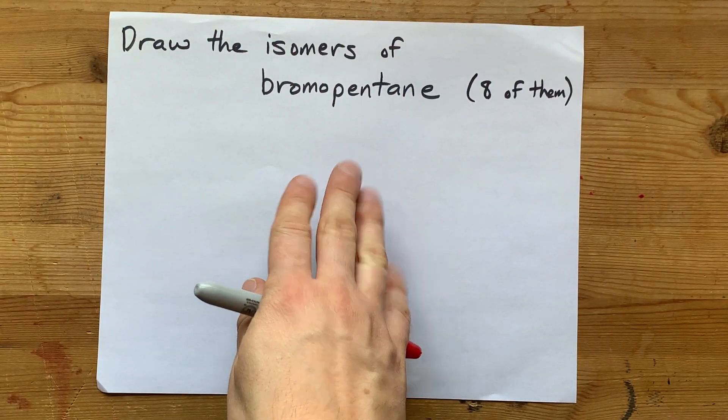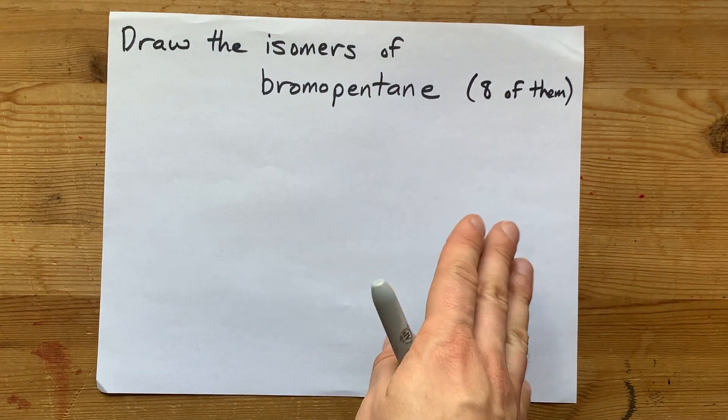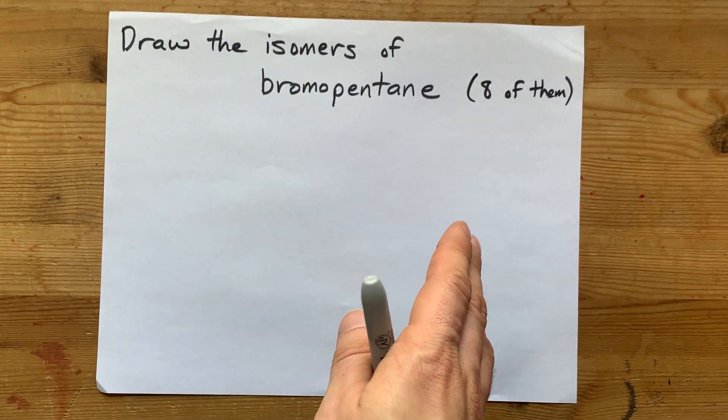How do you draw the isomers of bromopentane? Now there are going to be eight of them. I'm going to show you my method for doing something like this.